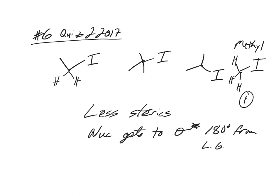So that's the least sterically hindered. So this would be the fastest. So that would be one. This is a primary carbon. The leaving group is attached to a primary carbon, a carbon bonded to two hydrogens. This is a tertiary. This is a tertiary carbon that's bonded to the leaving group.